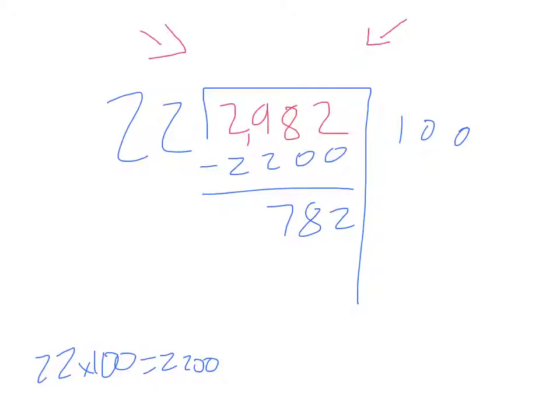How many times does 22 go into 782? Well, 22 times 30 equals 660. Let's use that. 782 minus 660 equals 122.